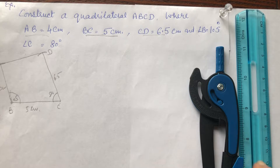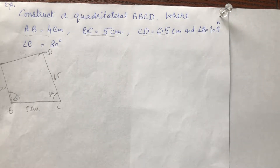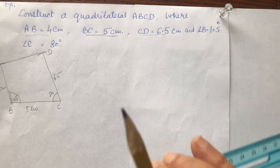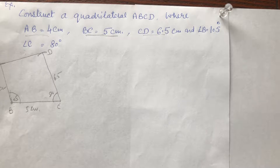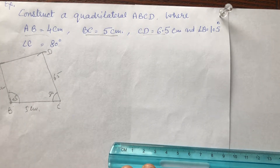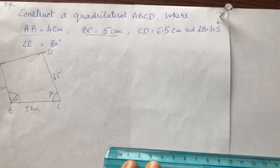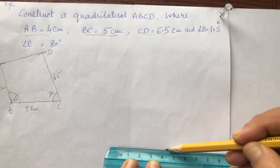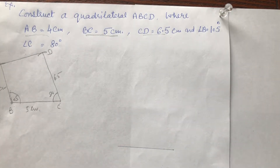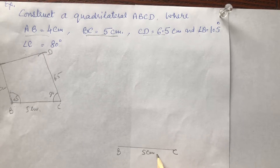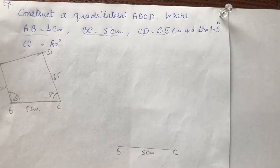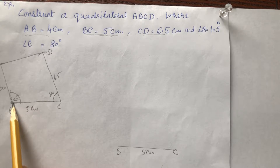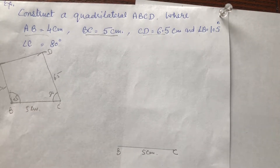Now we will take the proper measurements and do this step by step in the same way as I told you in the rough sketch. Take BC is equal to 5 cm. Make an angle of 105 degrees at point B.